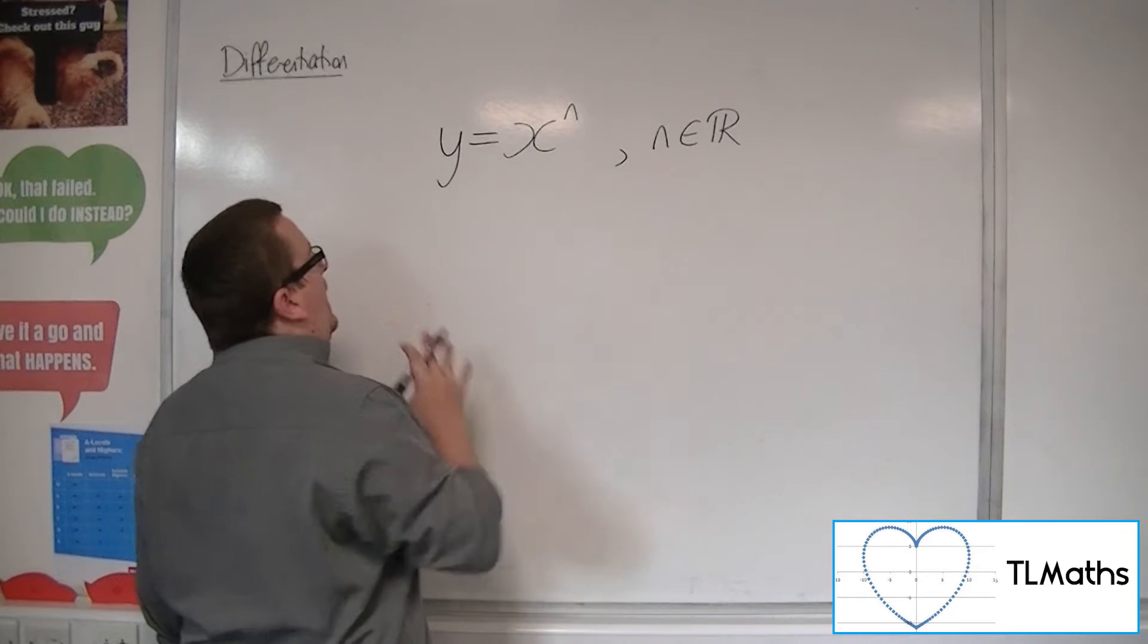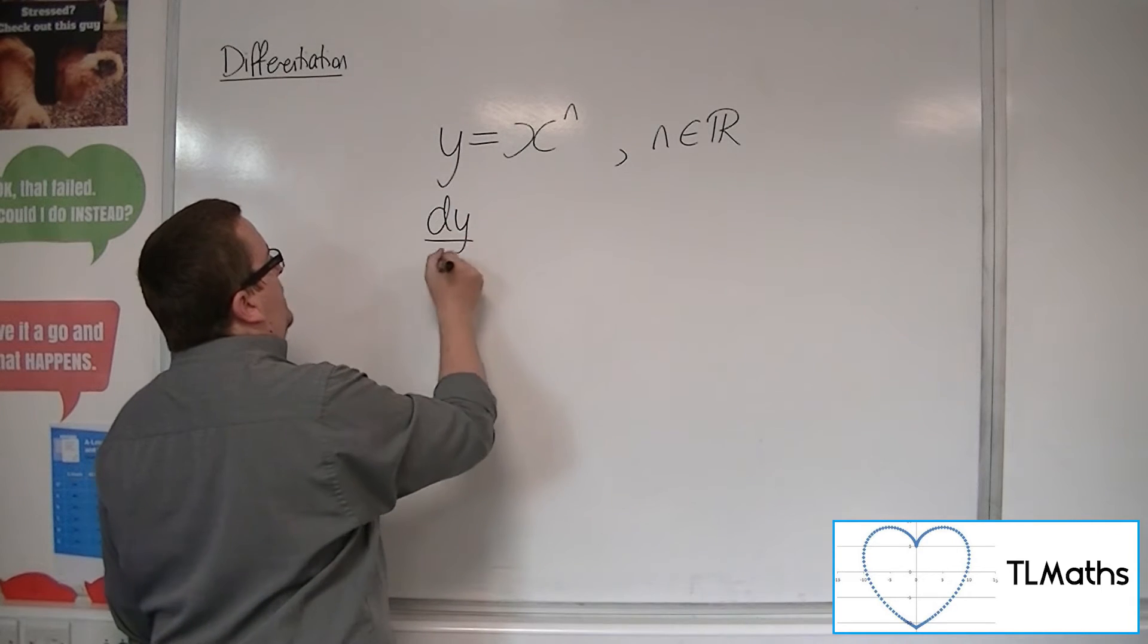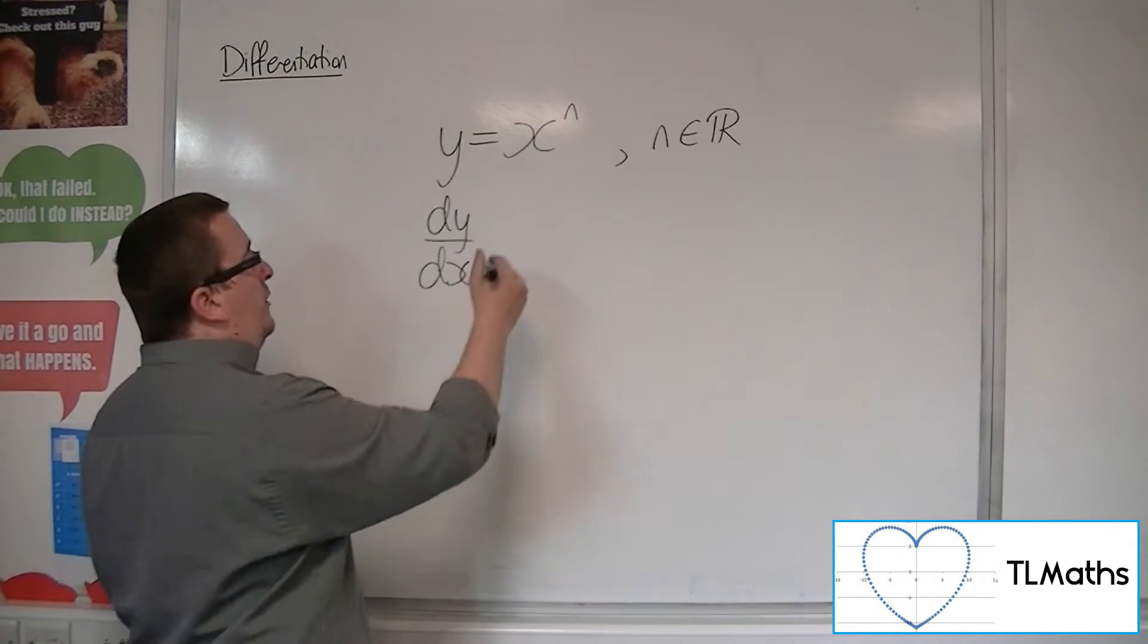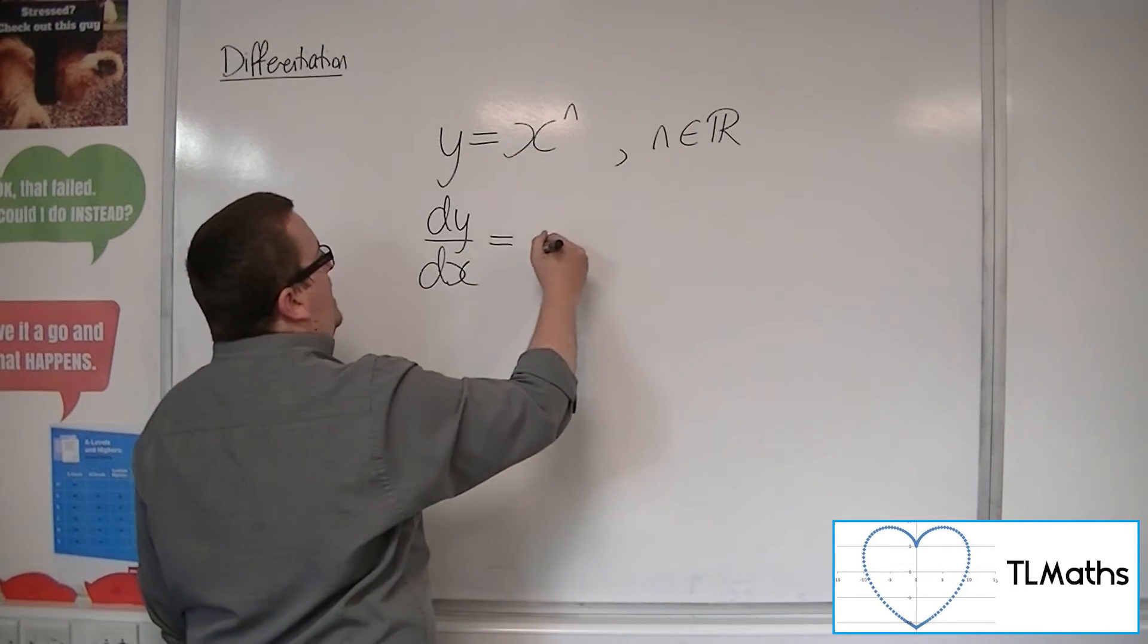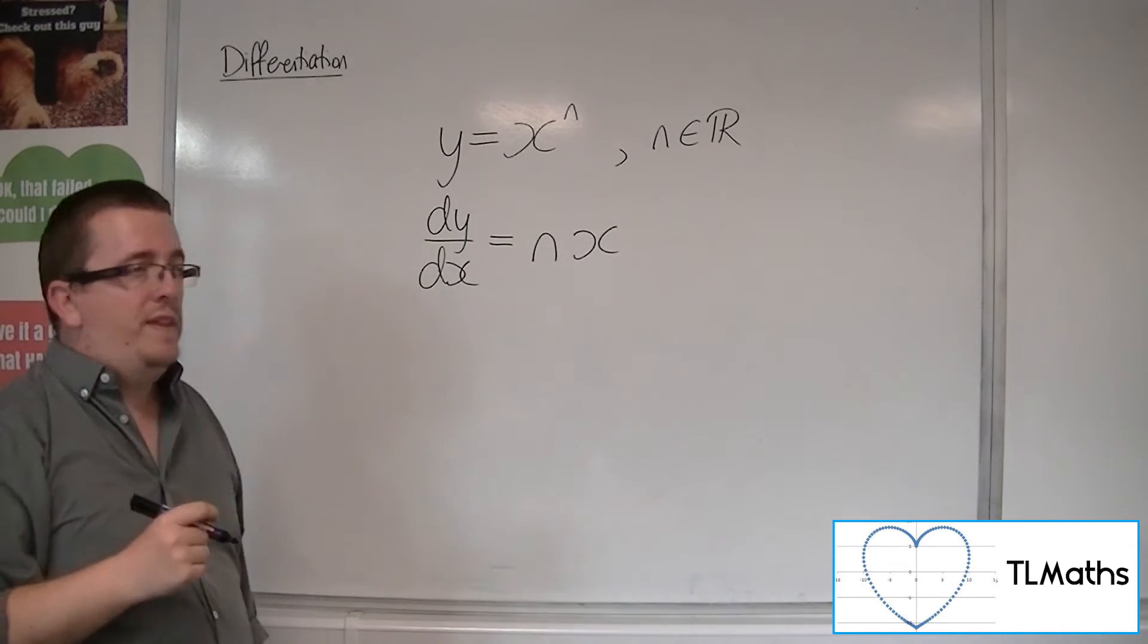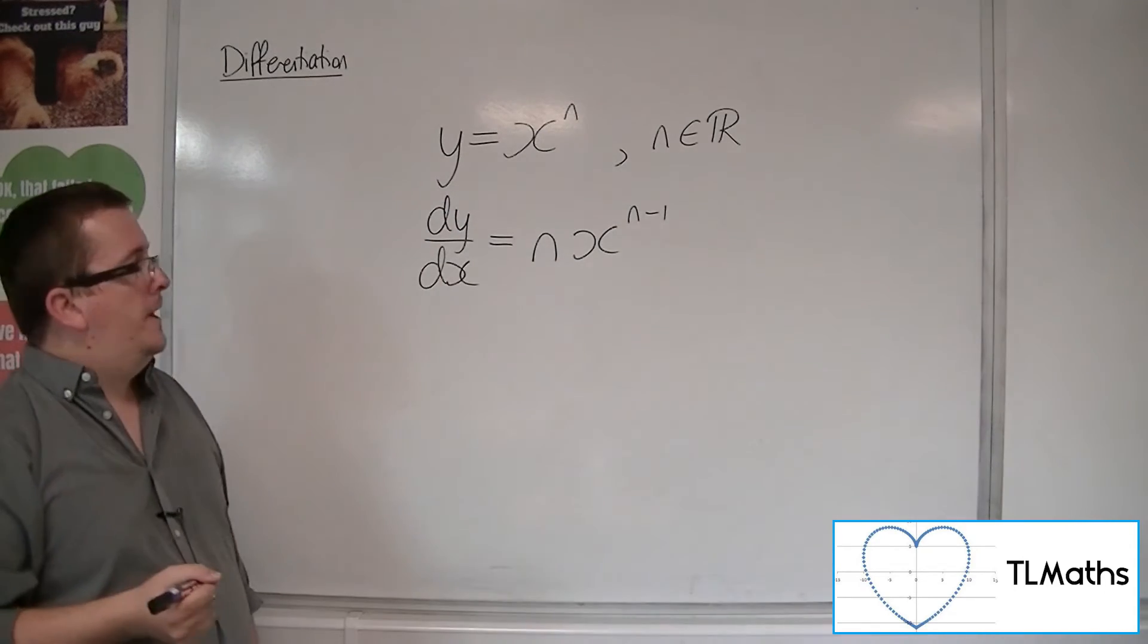Then what happens is that when you find the gradient function, we saw that x squared became 2x in the previous video. Here, the power, the n, comes down to front and multiplies with the x, and we subtract 1 from the power.